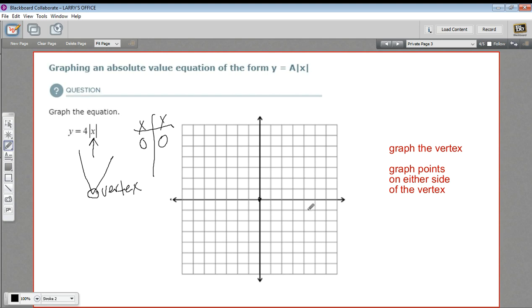The next step in graphing an absolute value equation is to choose points on either side of the vertex. So I'm going to choose this point right here and this point right here - so that's one and negative one - and see what those are. When I plug in one for x, the absolute value of that is still one, and four times one is four, so our y value here is four.